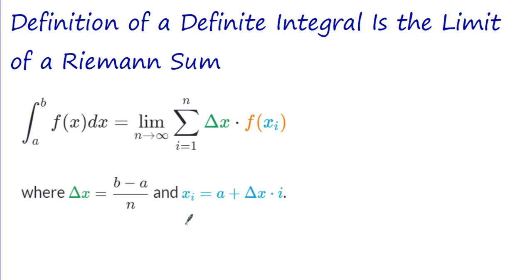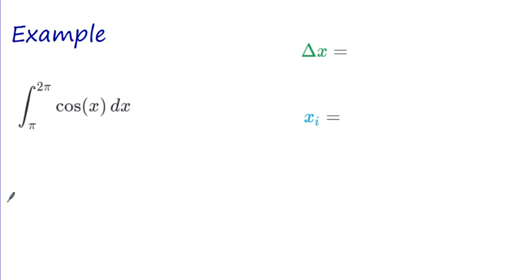Bottom line: the definition of a definite integral is the integral from a to b of f(x) dx equals the limit as n approaches infinity of the summation of delta x (the width) times f(xi) (the height). That is the definition of a definite integral as a limit of a Riemann sum. Let's go through some examples.